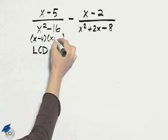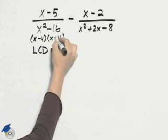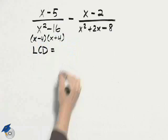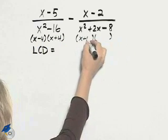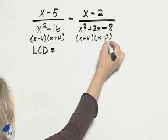The first denominator factors into x minus 4, x plus 4. The second factors into x plus 4, x minus 2.